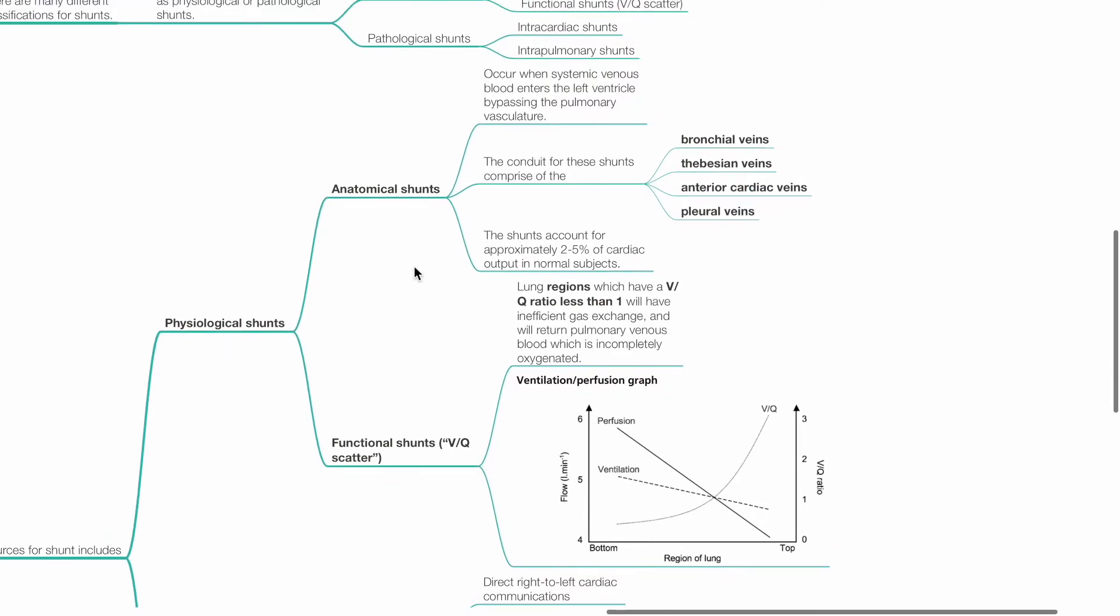Anatomical shunts occur when systemic venous blood enters the left ventricle, bypassing the pulmonary vasculature. The conduit for these shunts comprise the bronchial veins, thebesian veins, anterior cardiac veins and pleural veins. Anatomical shunts account for approximately 2-5% of cardiac output in normal subjects.